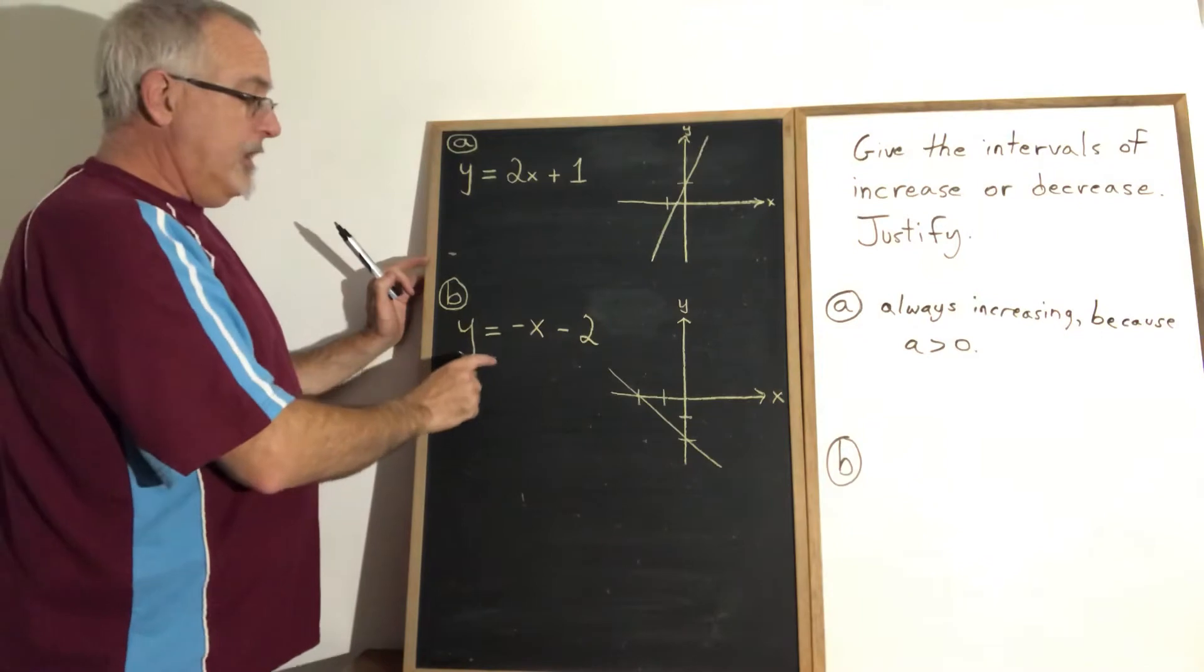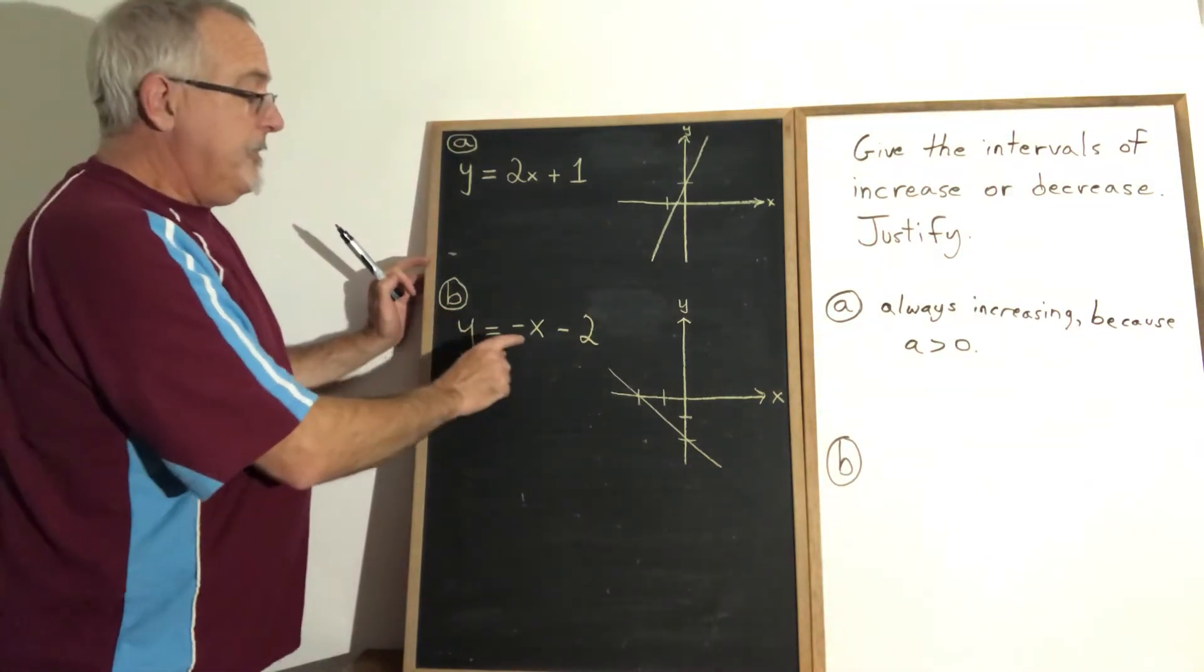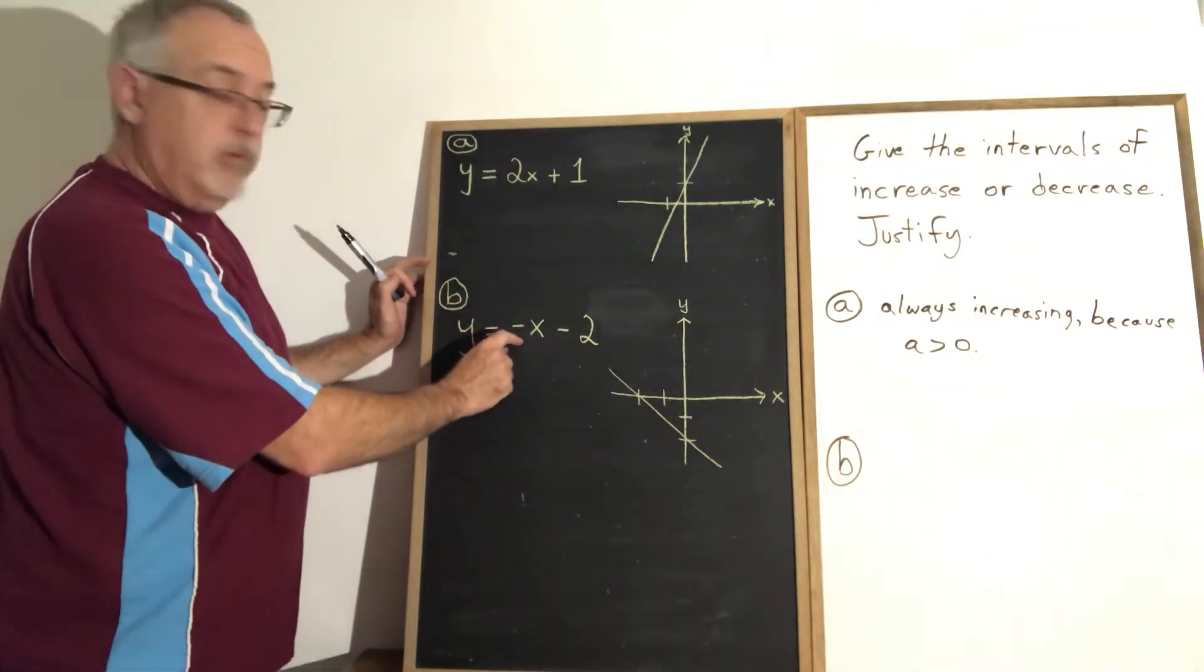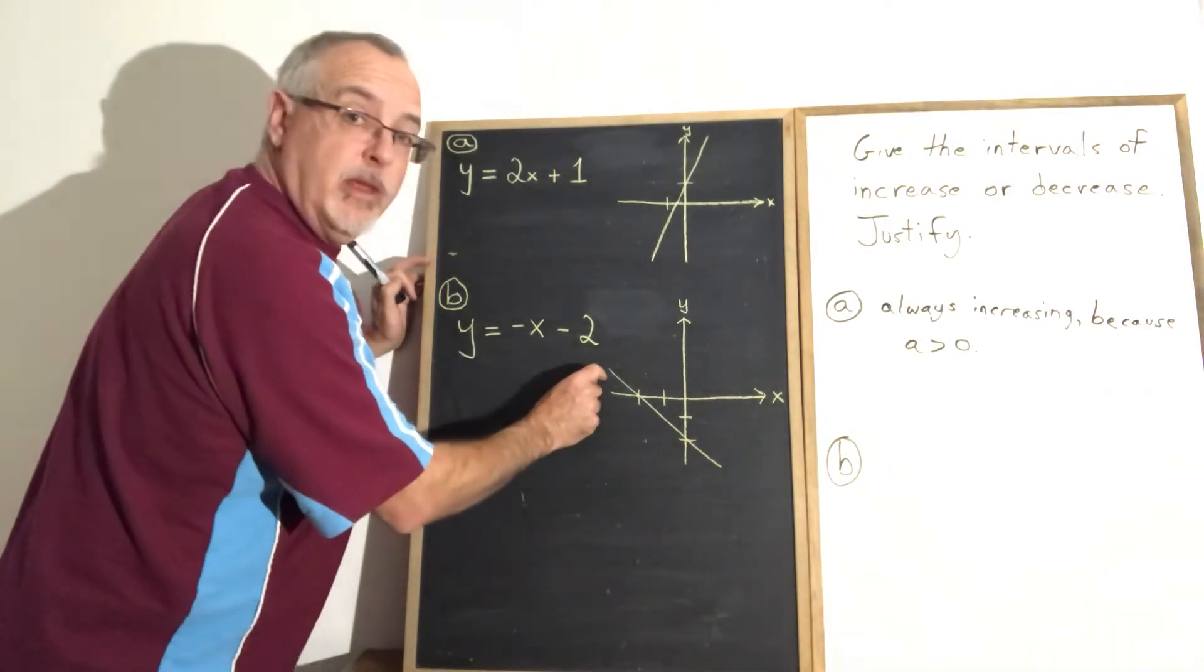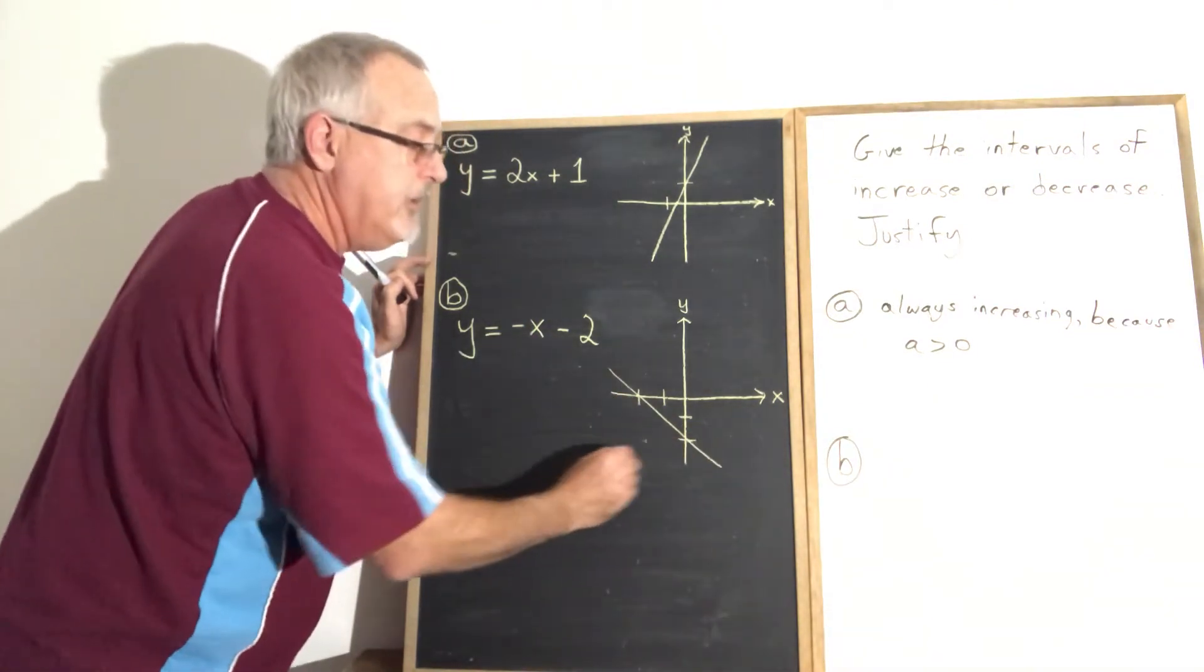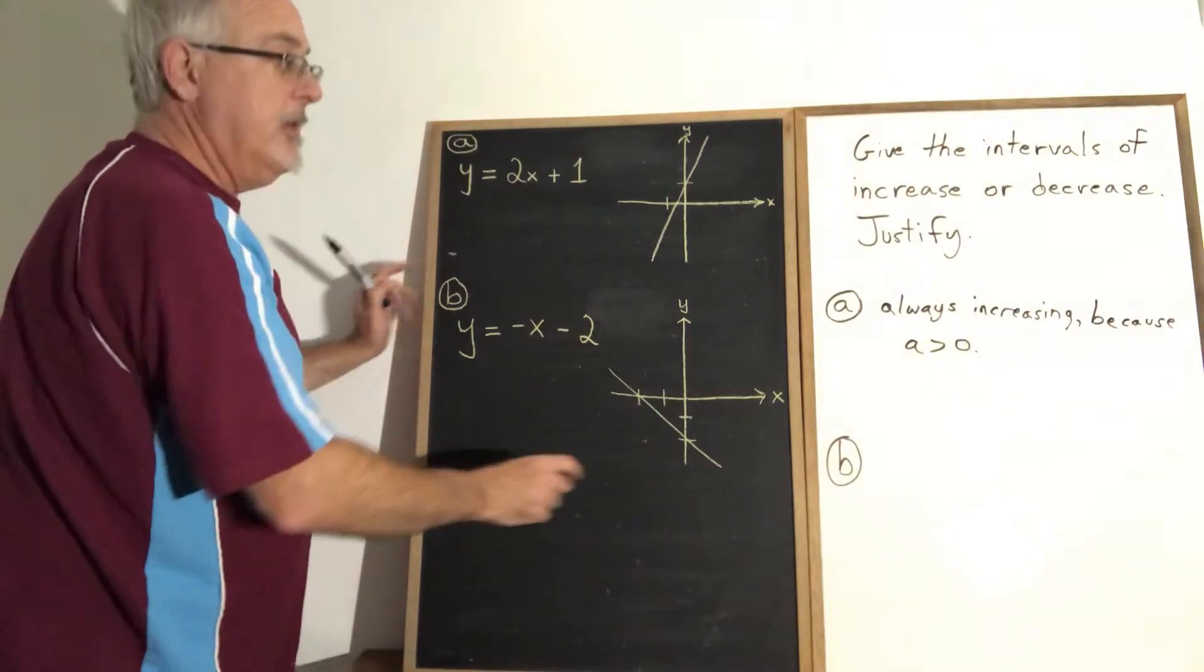And when you have a negative slope like in example B, where our slope A is negative 1, you end up with a line that always sinks as you read from left to right. This line will be always decreasing therefore.